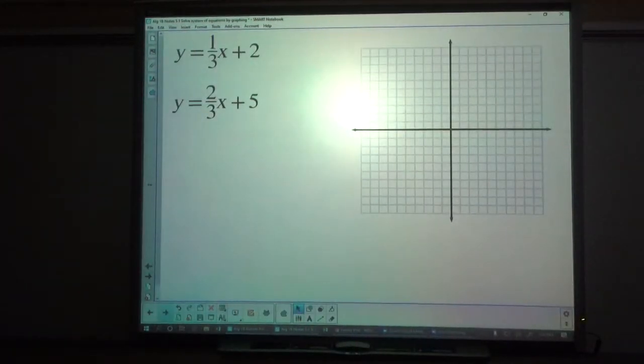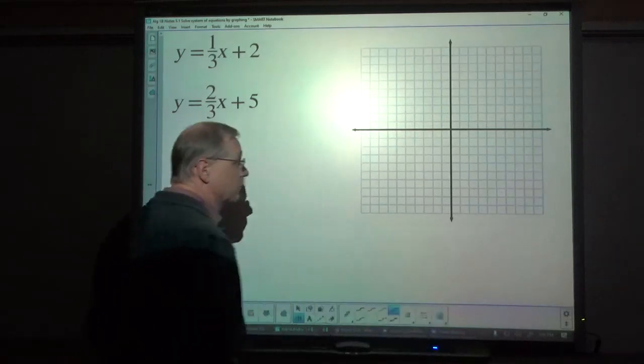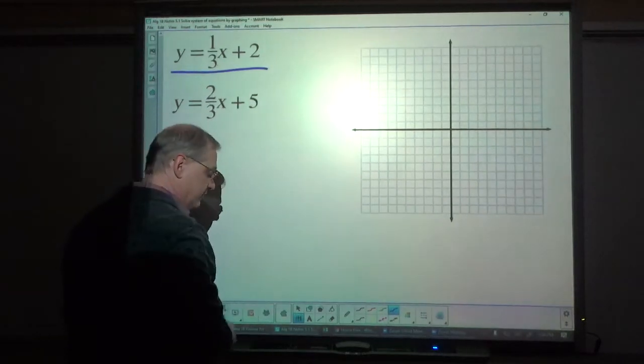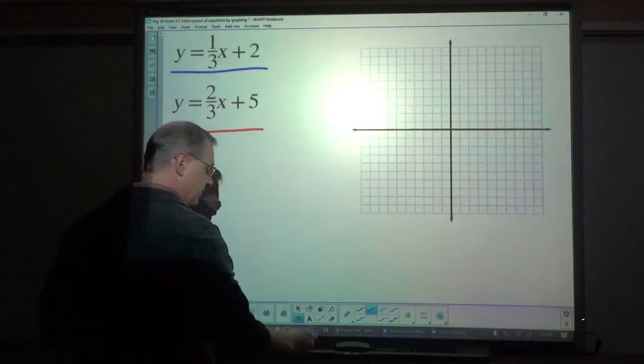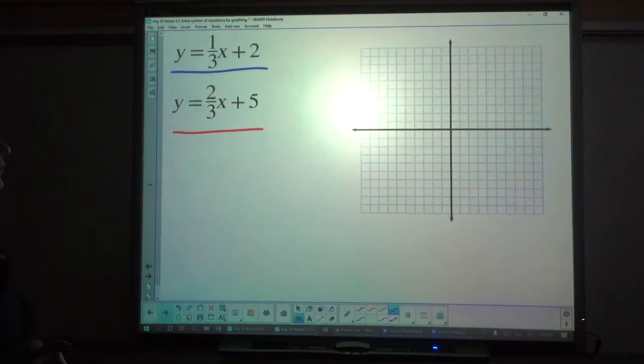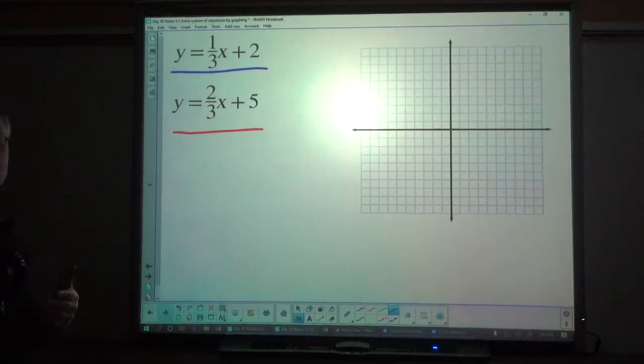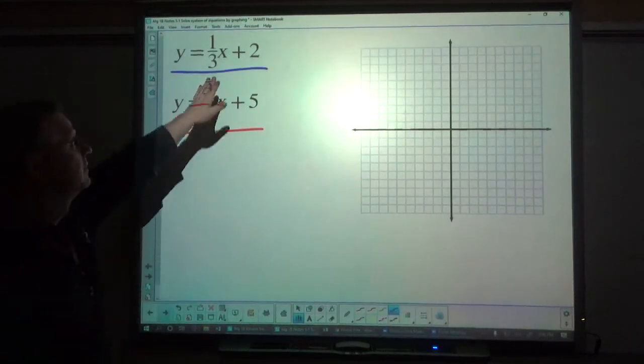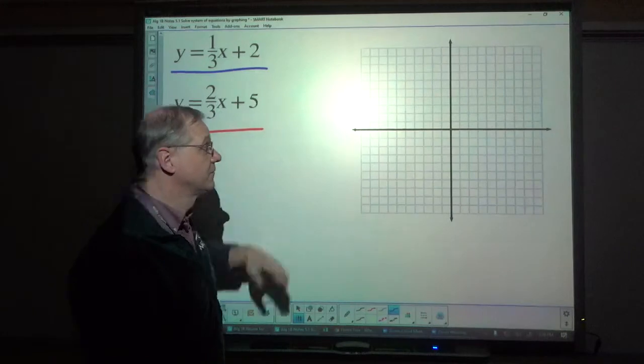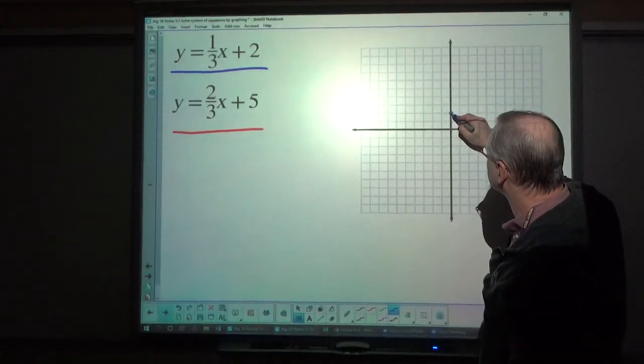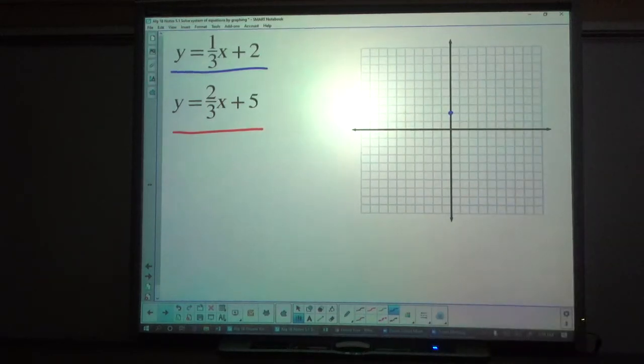Alright. Here's our next example. We have already in y equals mx plus b form, which is always nice, a pair of equations. So I'll do this one in blue and I'll do the next one in red so that we can see where they intersect. Now hopefully you recall that when we graph something in this form, we first find its y-intercept, positive 2 in this case. And so on the y-axis, we go up 2 because it's positive 2 and put a dot.